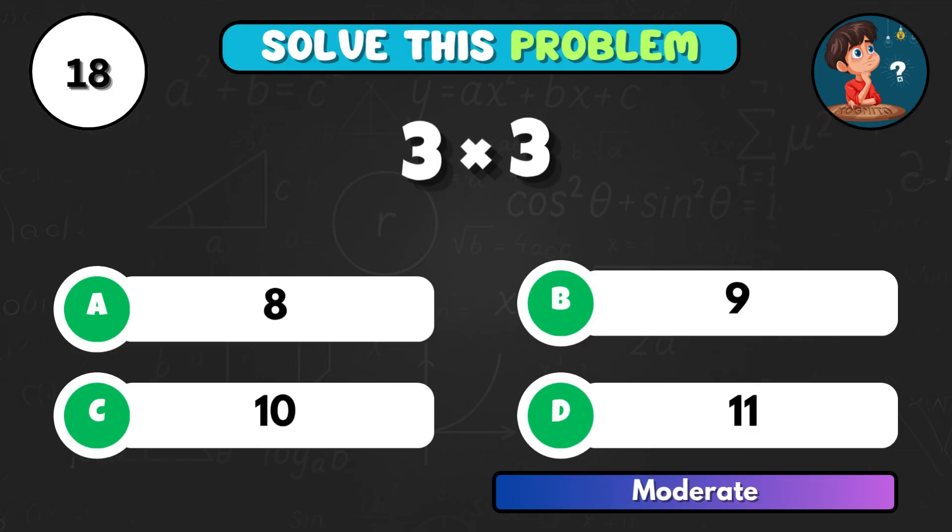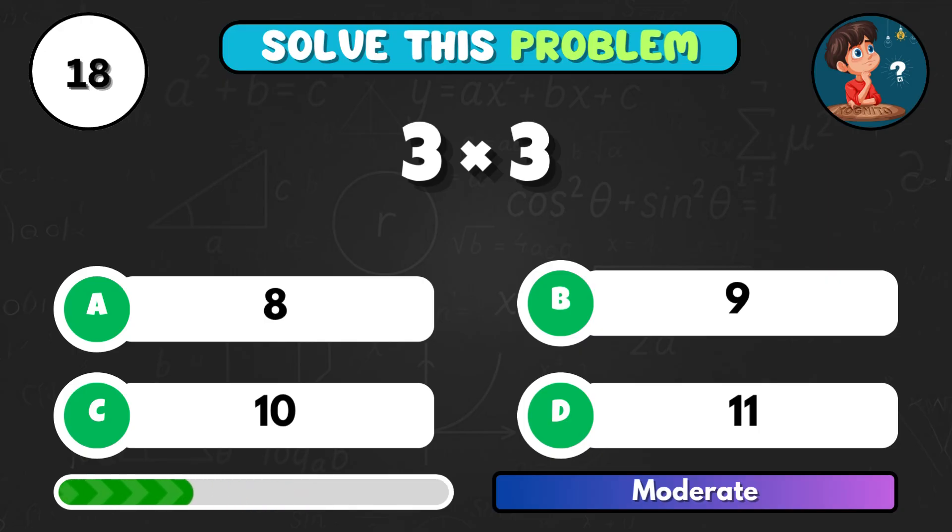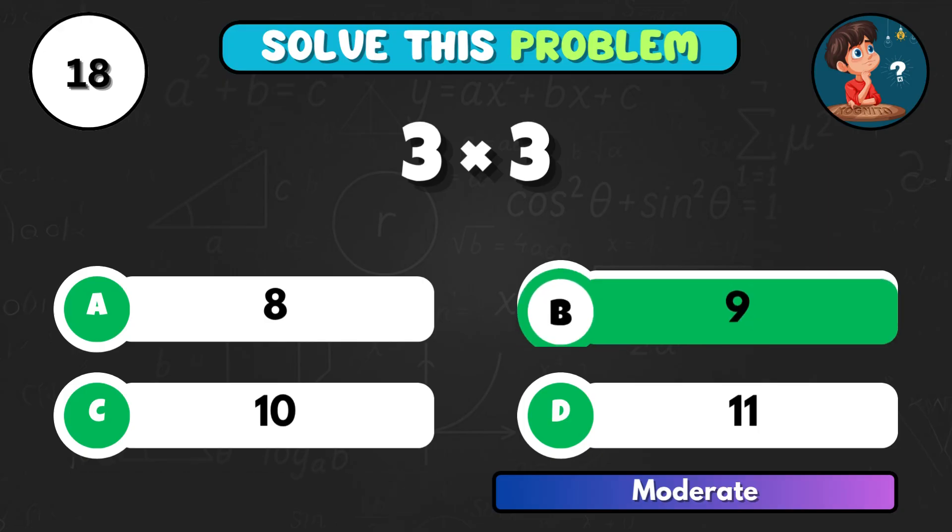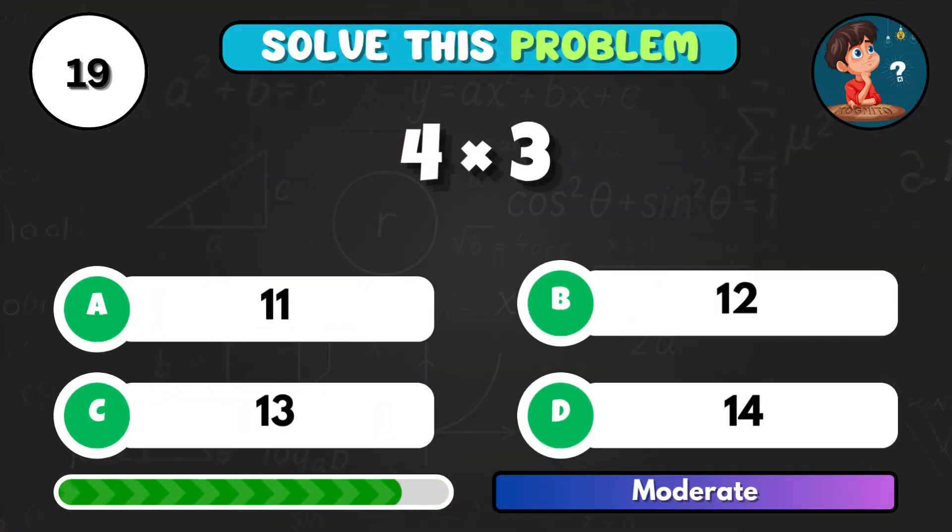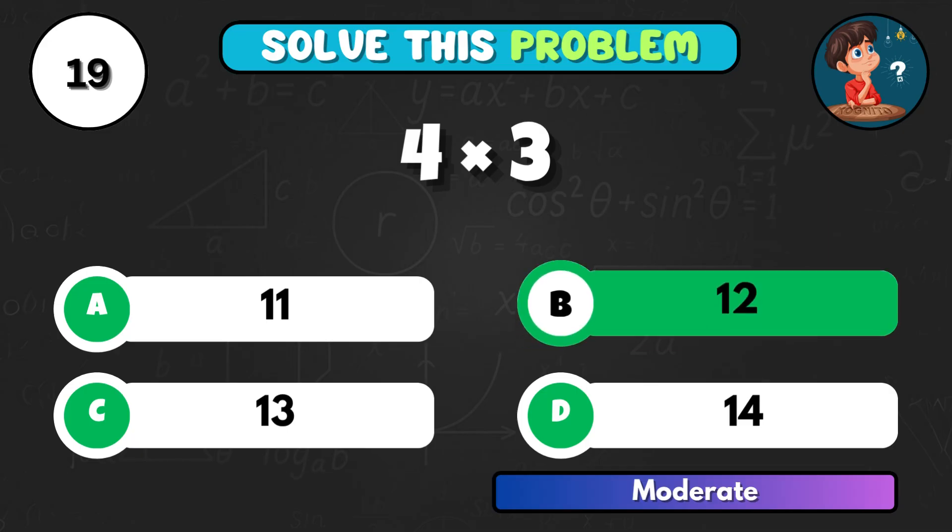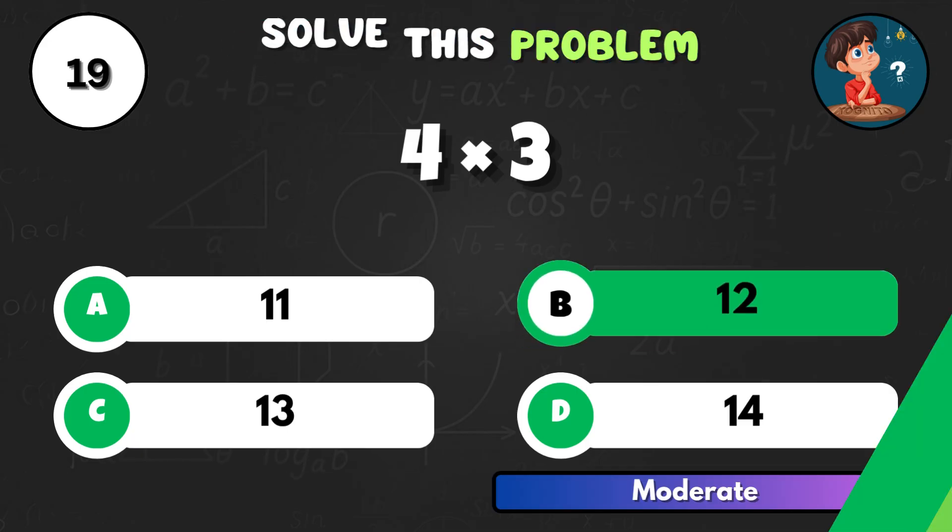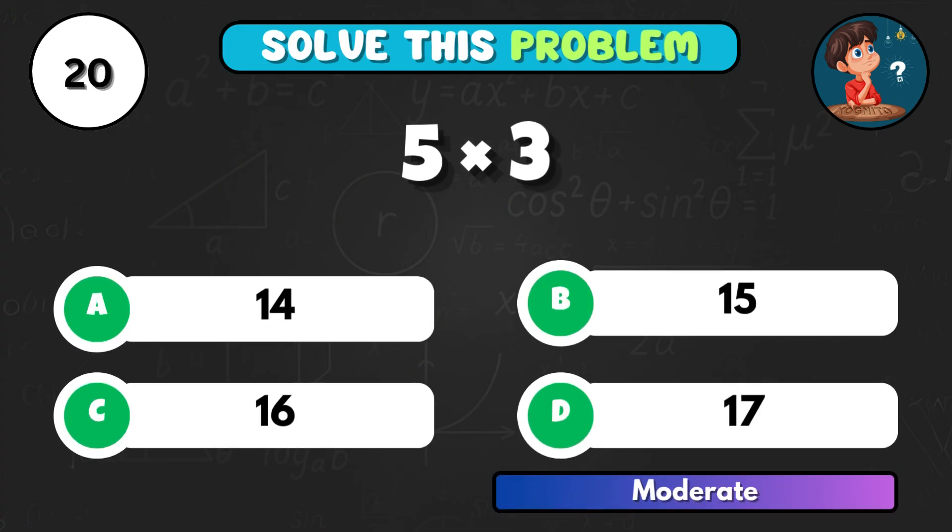Now for a square, 3 times 3. Answer is B, 9. 4 times 3, what's that? Correct option B, 12. 5 times 3, nice and quick. Answer is B, 15.